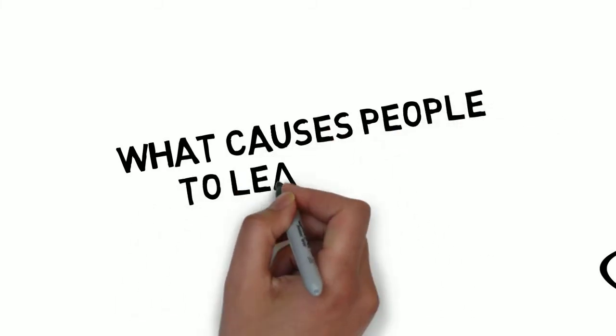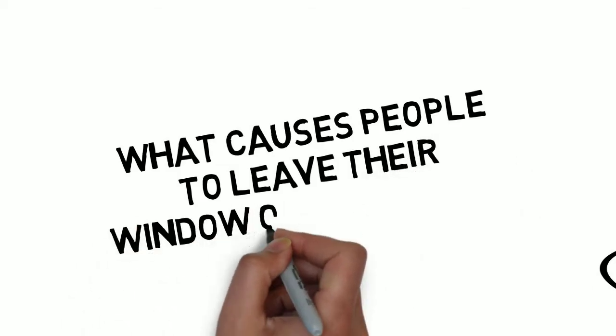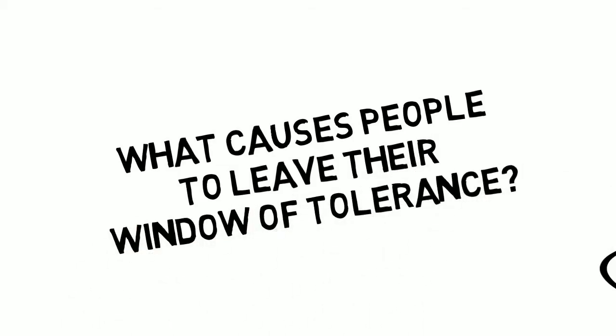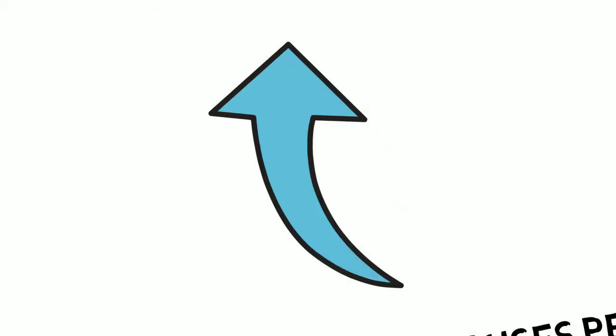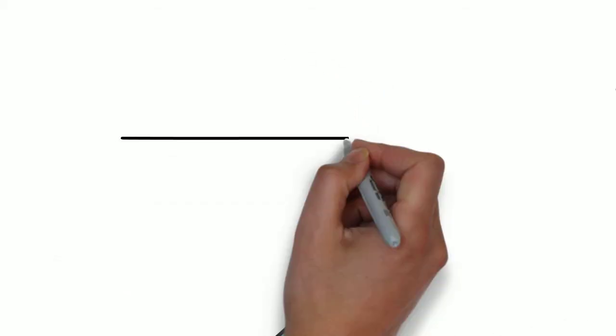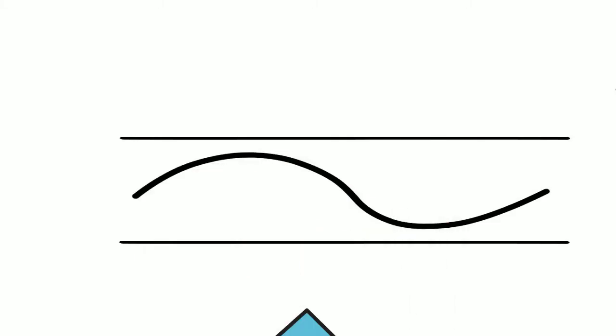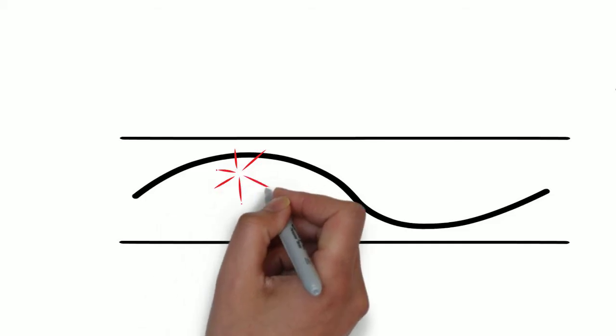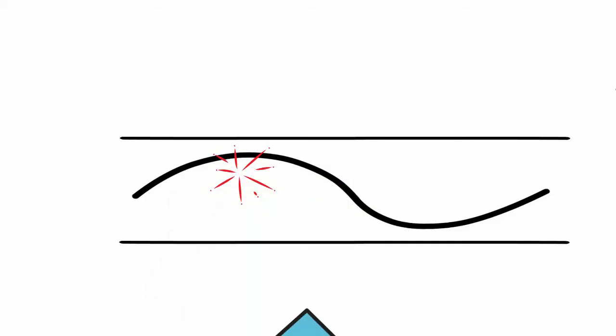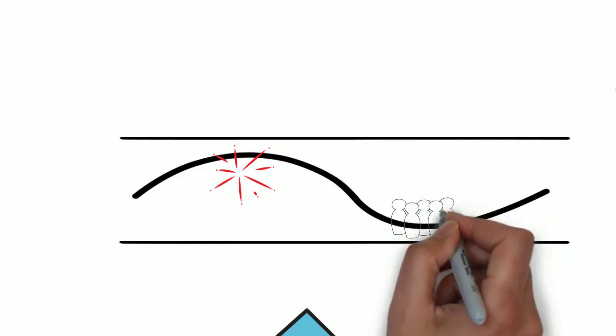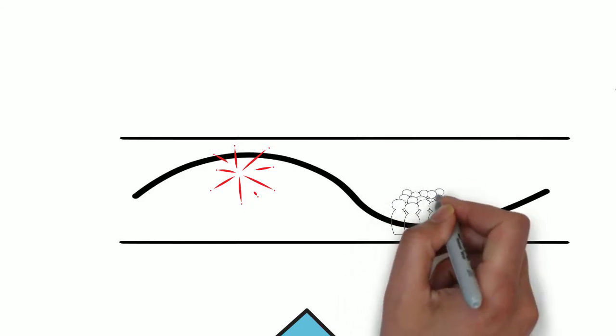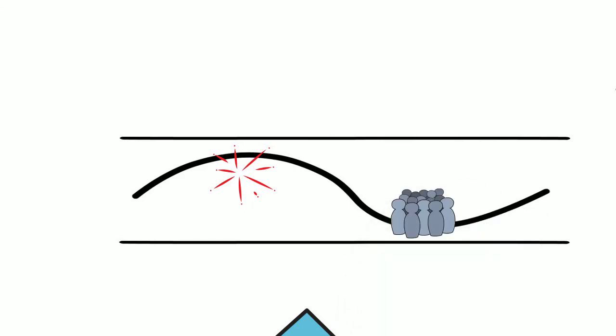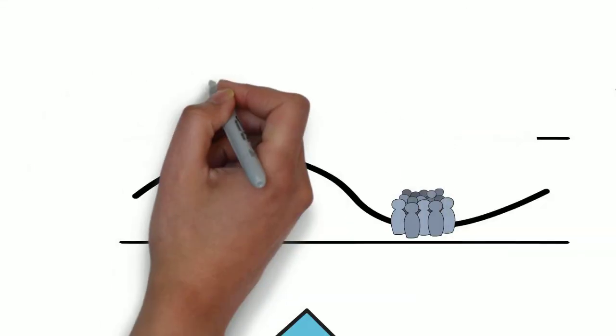So what exactly causes people to leave their windows of tolerance? Well, we know that a lot of different things can contribute to the increase or decrease in someone's level of activation. Danger is a primary reason. For example, a loud noise may increase someone's level of activation and send them to the top of their window. Or being in a crowd may make it difficult for some people to stay completely present in the moment, and their alertness may dip into the lower part of their windows.